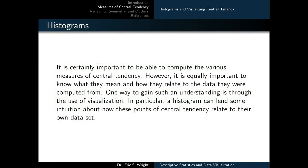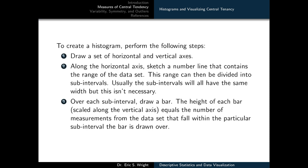It is important to compute the various measures of central tendency, but it's equally important to understand what they mean and how they relate to the data. One way to gain such understanding is through visualization. In particular, a histogram can provide intuition about how these points of central tendency relate to their dataset. To create a histogram: first draw horizontal and vertical axes, then sketch a number line along the horizontal axis spanning at least from the minimum to the maximum value of the dataset. This range can then be divided into subintervals, usually of equal width.